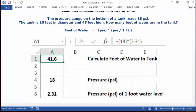So you type equals, open parenthesis 18, close parenthesis, multiplication key, open parenthesis 2.31, close parenthesis. Then you press enter. And 41.6 is the feet of water in this tank. And that's your answer, 41.6.